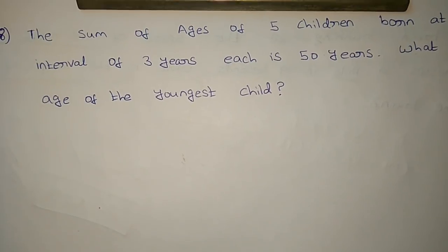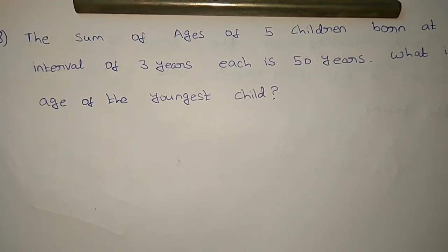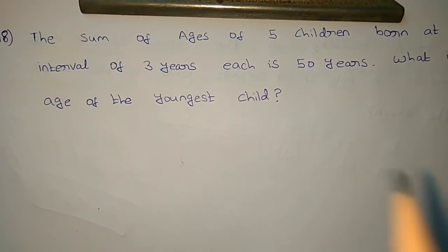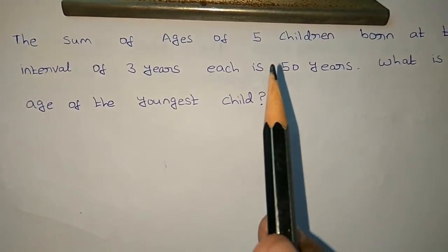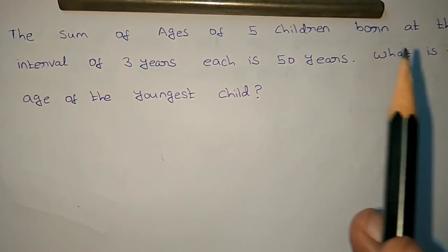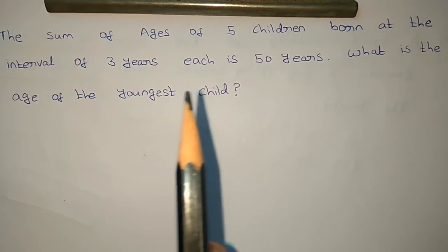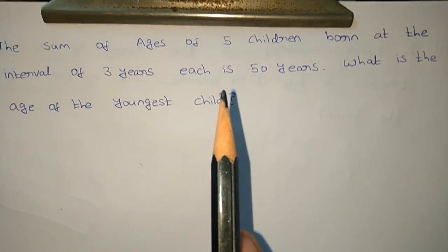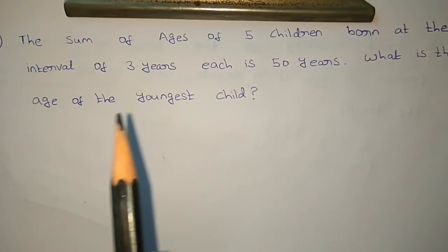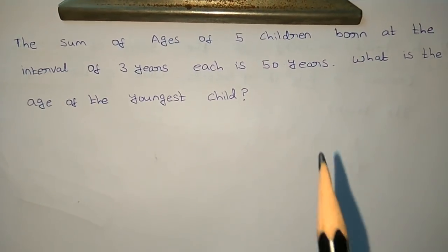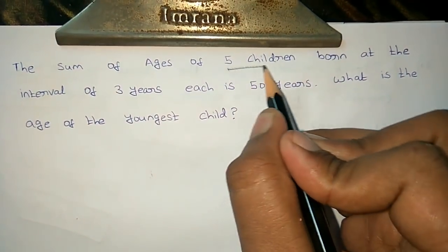Previously we got important questions. One of the models is to solve the age problem. The sum of the ages of 5 children born at the interval of 3 years each is 50 years. What is the age of the youngest child?